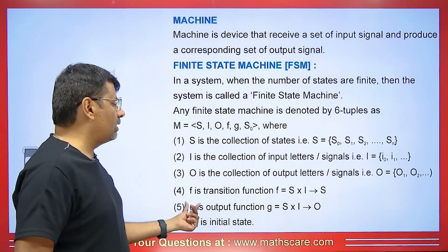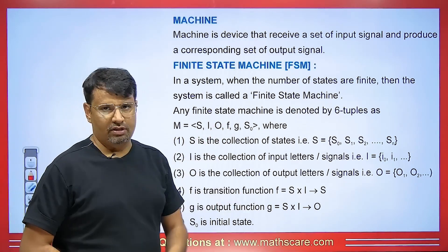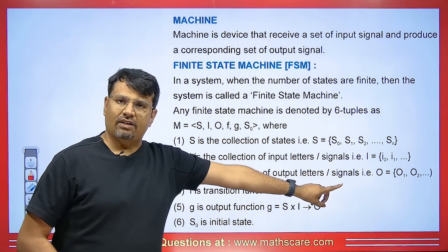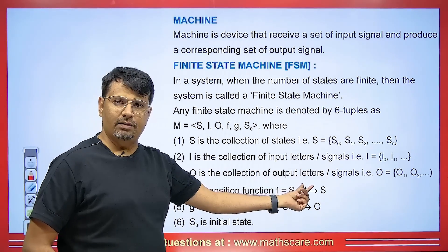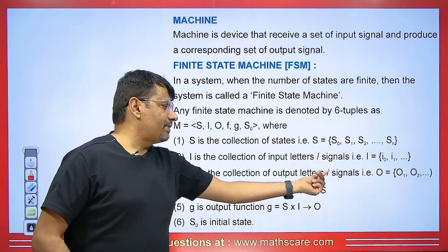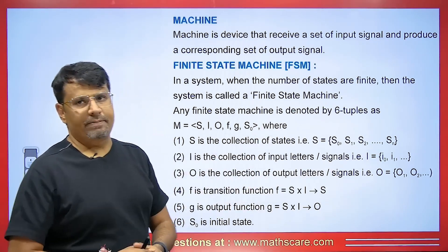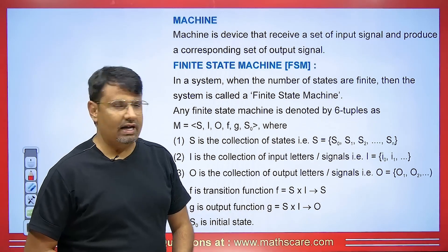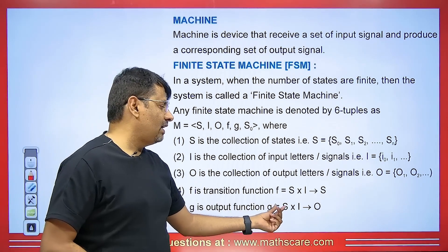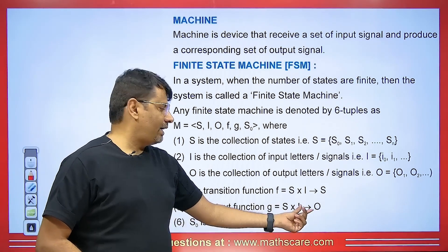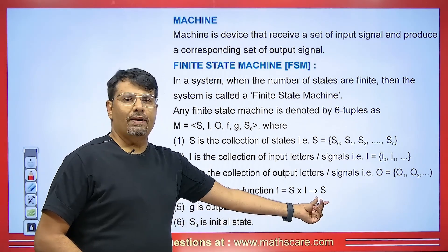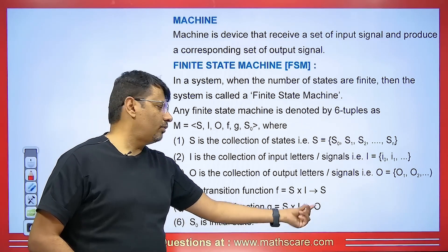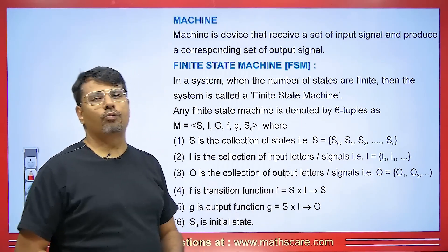F is called the transition function, which comes from S cross I — where S is a state and I is the input — and then again it goes to a state. G is called the output function which goes from S cross I to O, meaning it goes from a state and input which gives us an output.